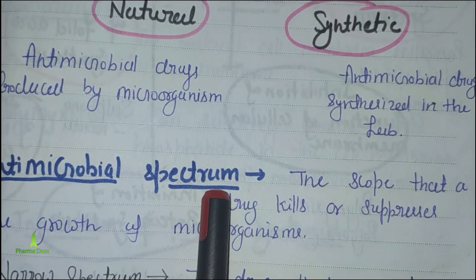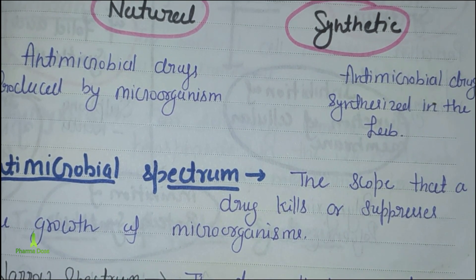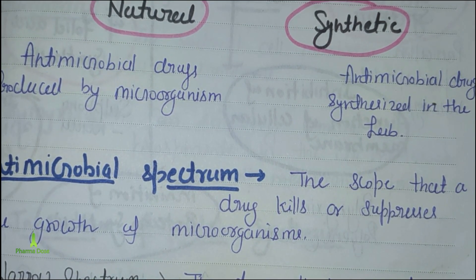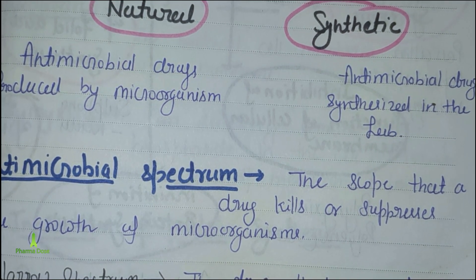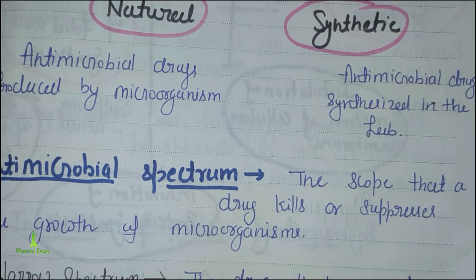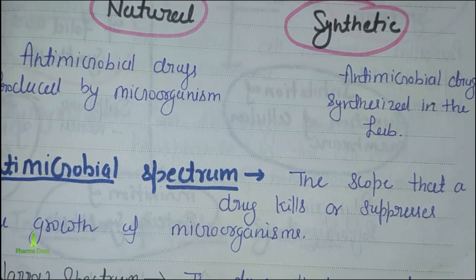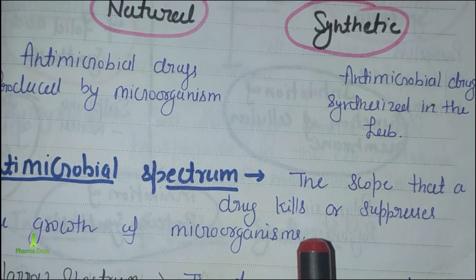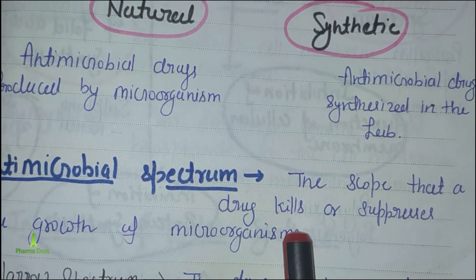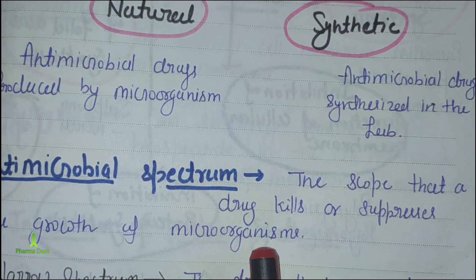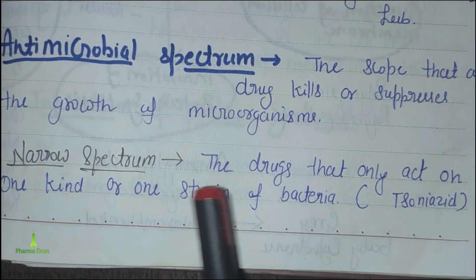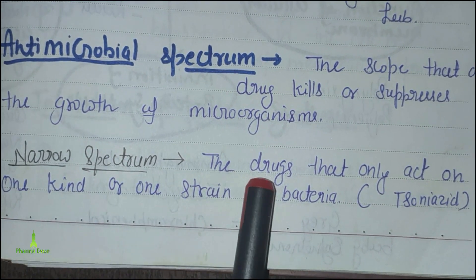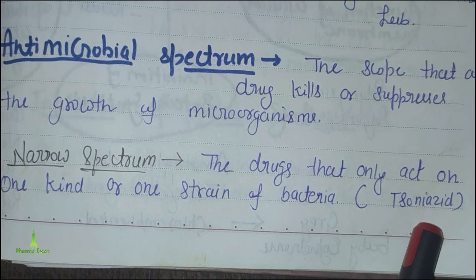Next is antimicrobial spectrum, which refers to the range of antimicrobial activity of an antibiotic — how many types of bacteria, whether gram-positive or gram-negative, it can kill or inhibit. Narrow spectrum drugs only act on one kind or one strain of bacteria. For example, Isoniazid, which is an anti-tuberculosis drug.